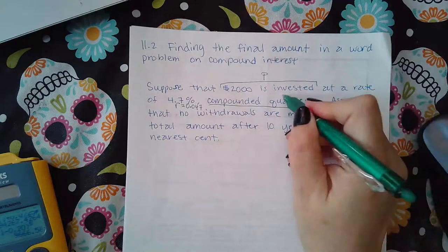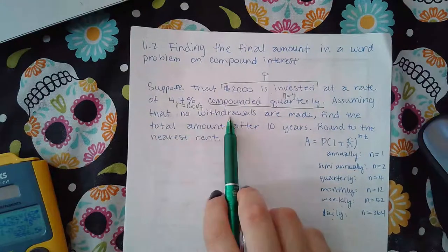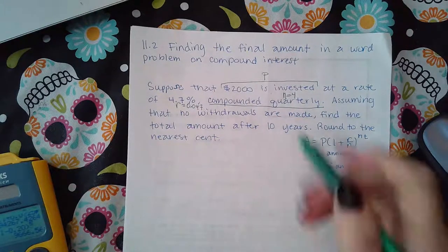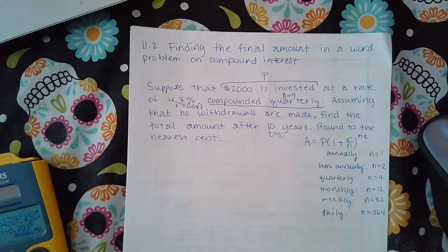Compounded quarterly means my N equals four times a year. Assume that no withdrawals are made. Find the total amount after 10 years. So my T equals 10 years, and then round to the nearest cent.